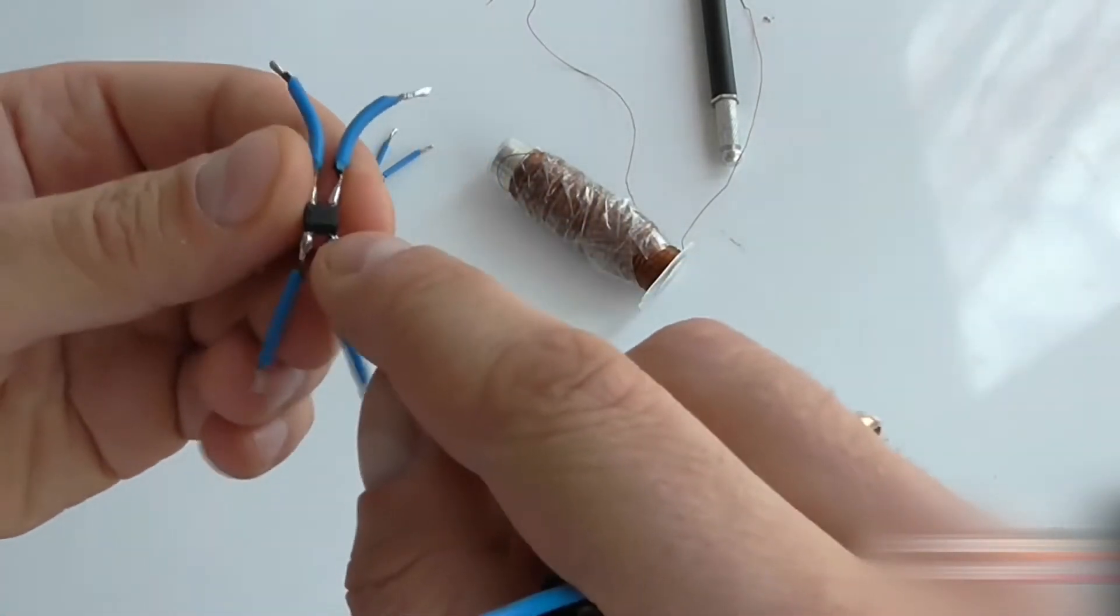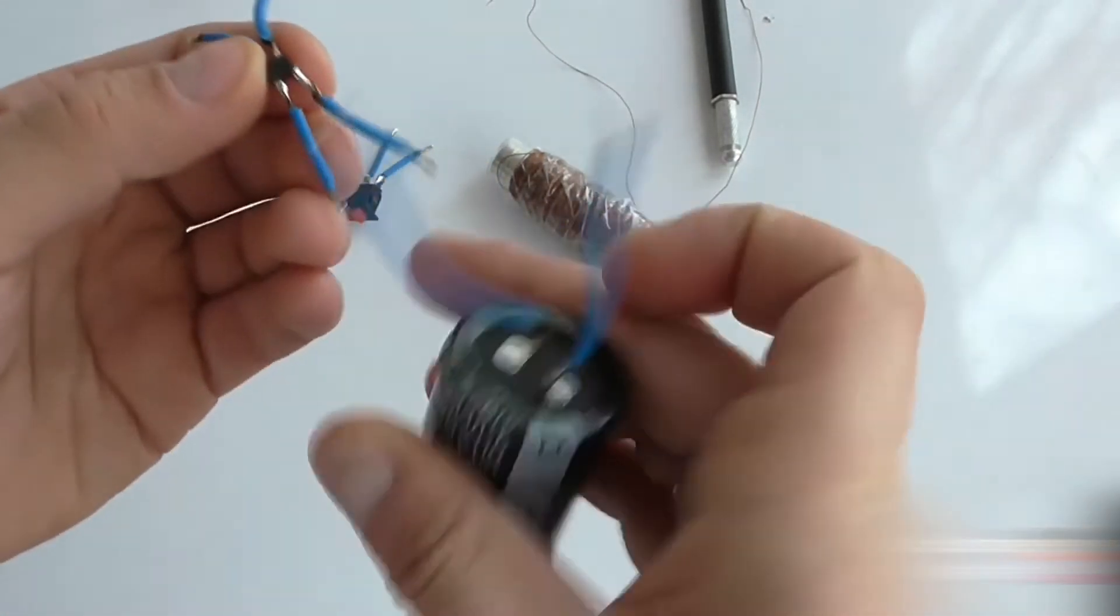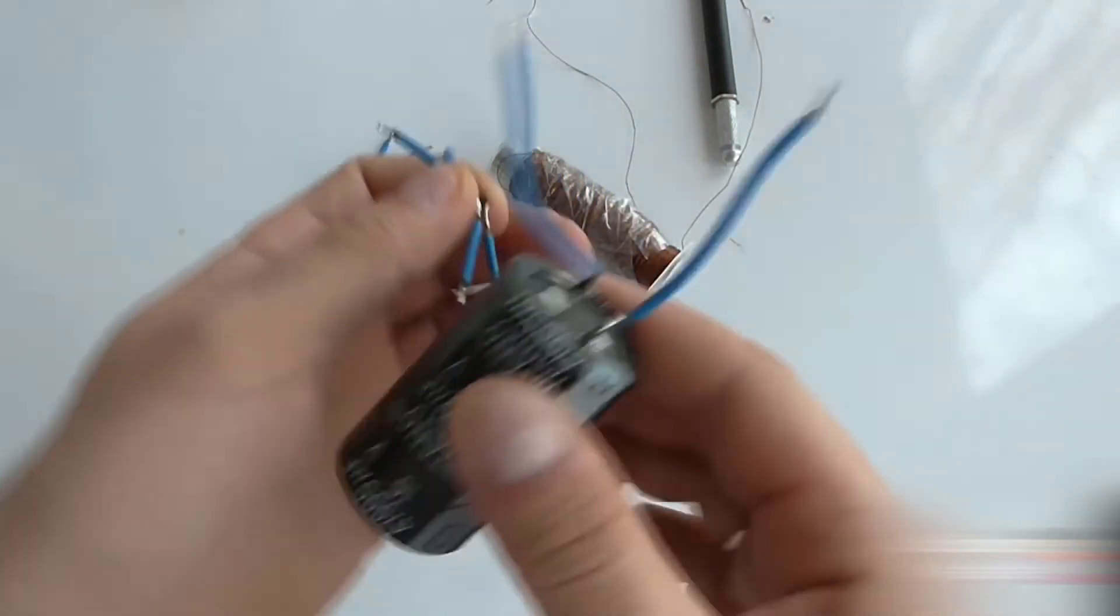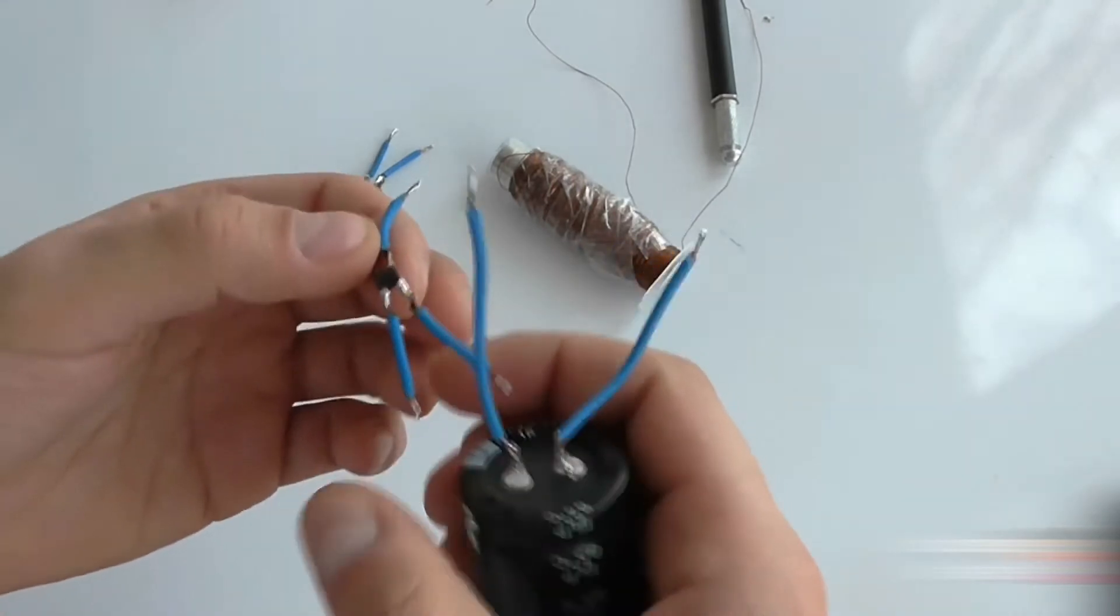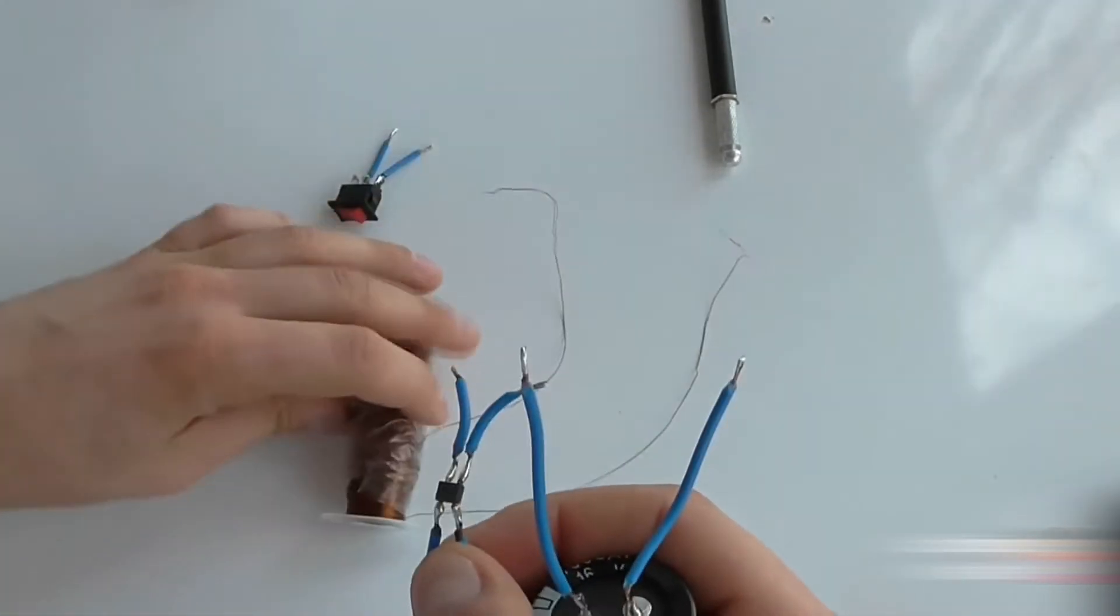Connect the negative terminal from the diode bridge to the capacitor's negative wire. Connect the positive terminal to the positive wire. Solder these wires to these wires of the diode bridge.